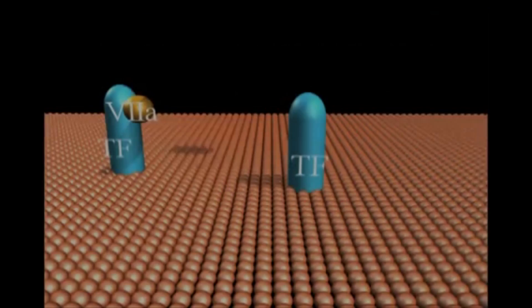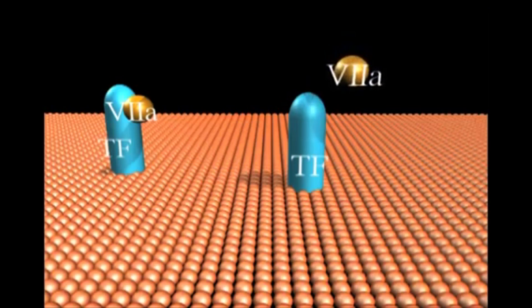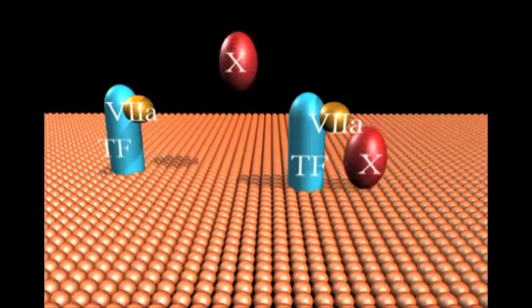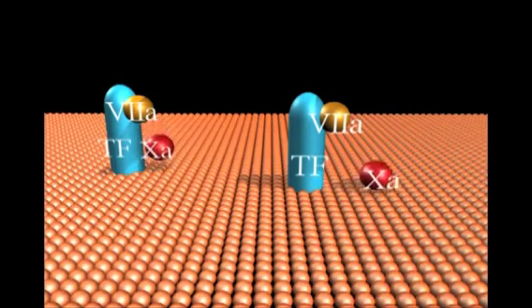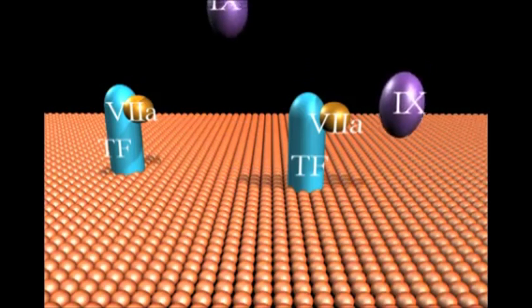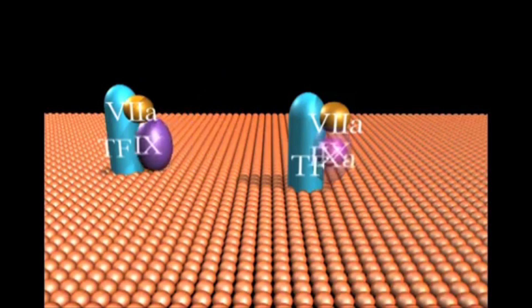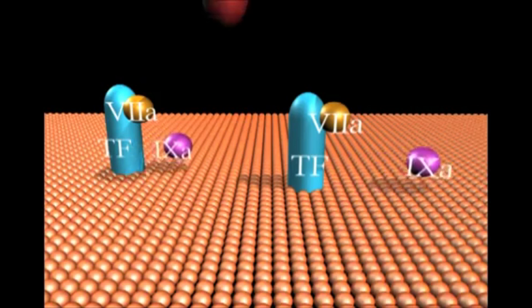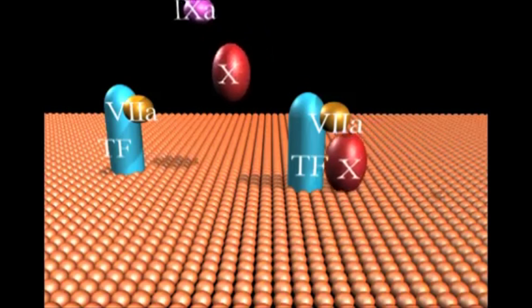Tissue factor (TF), expressed on extravascular tissue, binds pre-existent plasma factor 7a to activate two substrates, factor 9 and factor 10, to their respective enzyme products, factor 10a and factor 9a.